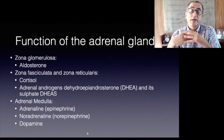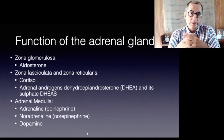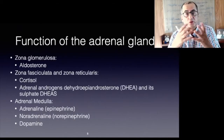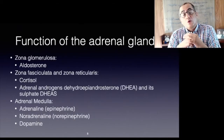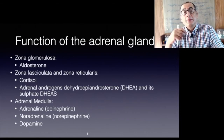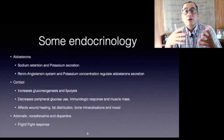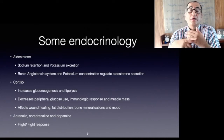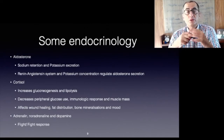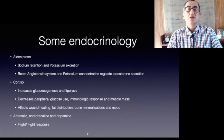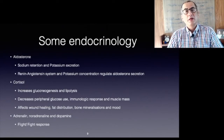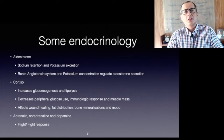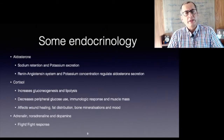The adrenal glands secrete mineralocorticoids, glucocorticoids, androgens, and catecholamines. The mineralocorticoids manage sodium and potassium in the body. Glucocorticoids are involved in numerous metabolic effects including glucose and lipid metabolism, inhibiting immunological response, affecting fat distribution, wound healing, bone resorption, and causing euphoria or rarely depression.